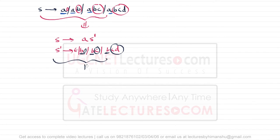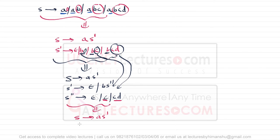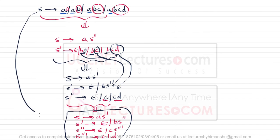Eliminating the second level gives: S → aS′, S′ → ε | bS″, S″ → ε | c | cd. But S″ still has left factoring with 'c' as the common prefix. After a third level: S → aS′, S′ → ε | bS″, S″ → ε | cS‴, S‴ → ε | d. This final grammar has no left factoring.